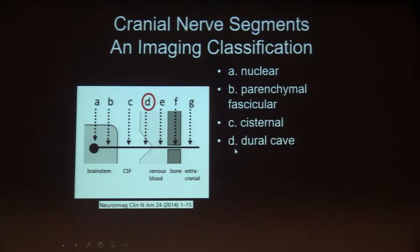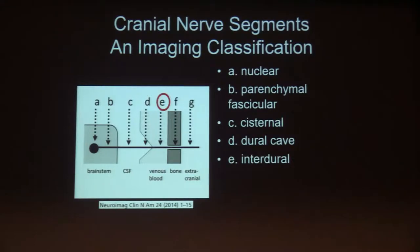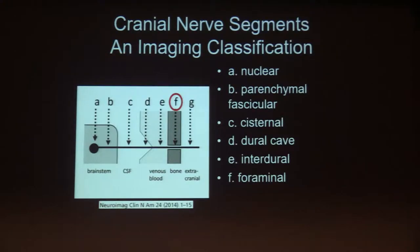We know there are two layers of dura, an inner and an outer layer. In the D or dural cave segment, the cranial nerves are still surrounded by cerebral spinal fluid within the subarachnoid space, but they've come into close proximity to the inner layer of the dura. In the E or interdural segment, the cranial nerves are between those two layers of dura. In the F or foraminal segment, the cranial nerves pass through the foramina in the skull base to exit the skull — with the exception of the eighth cranial nerve, the vestibulocochlear nerve, which is the only cranial nerve that doesn't exit the skull.